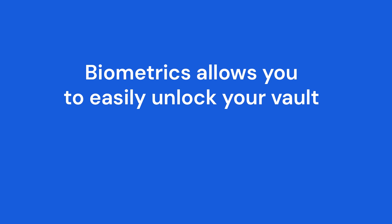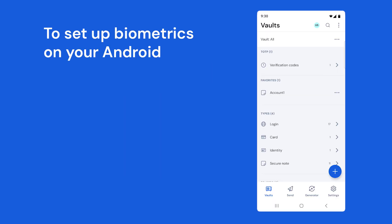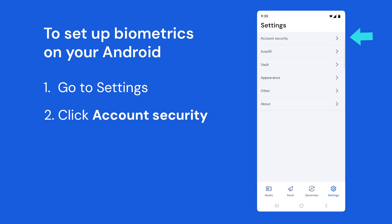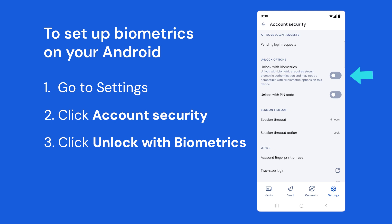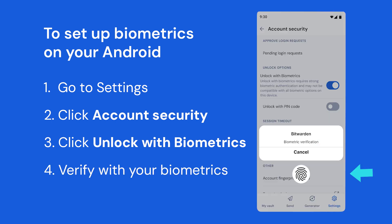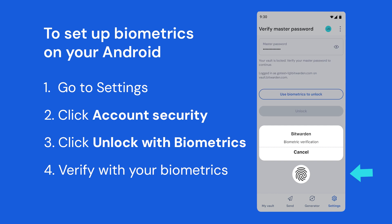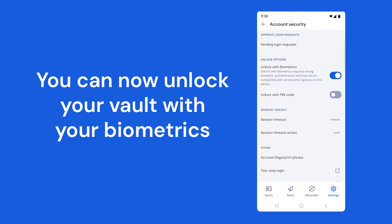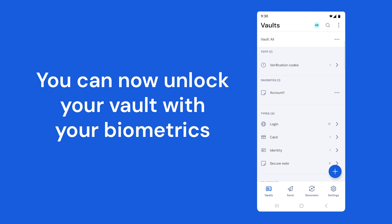Biometrics allows you to easily unlock your vault. To set up biometrics for your Android device, go to Settings in Bitwarden, then Account Security, then unlock with biometrics. You'll be asked to verify with biometrics. After you verify your fingerprint, you're all set — you can now unlock your vault with biometrics.